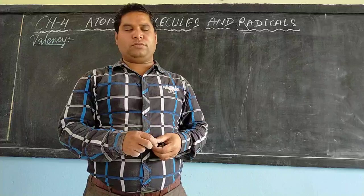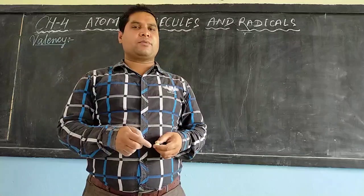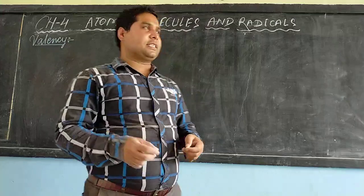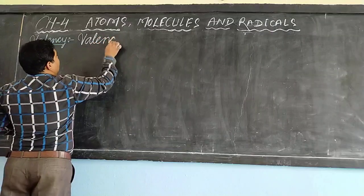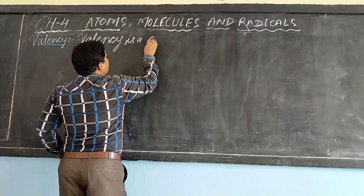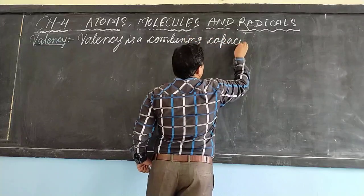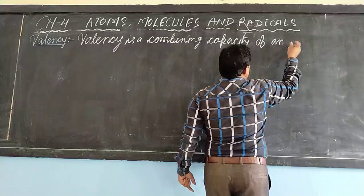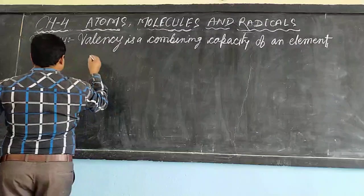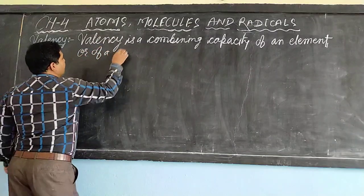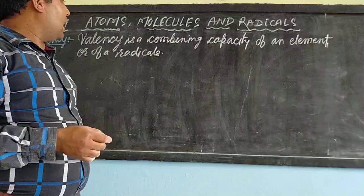I am going to continue Chapter 4, Topic: Atoms, Molecules and Radicals. Today in this video I am going to explain Valency. Valency is a combining capacity of an element, of a compound, or of radicals. Today I am going to explain Balancing.